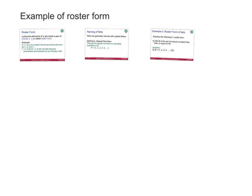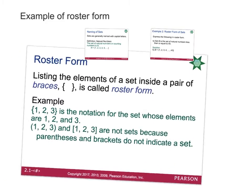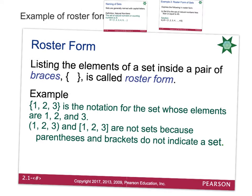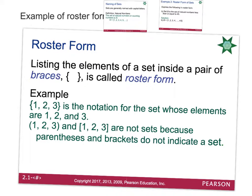It's a little more condensed to write your set in roster form. Roster form is going to be written in what's called braces — I often call them curly brackets. You'll use the curly brackets and then make a list of whatever your set is inside the curly brackets. For example, if you had the numbers 1, 2, 3 in the braces, that would be the set {1, 2, 3}. It is important to use braces or curly brackets — you cannot use parentheses, and you cannot use square brackets. Those will not be considered sets, so make sure you use the proper type of bracket.